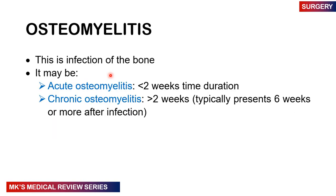So what exactly is osteomyelitis? It's infection of the bone — remember, anything that ends in 'itis' means inflammation — so there is inflammation and infection of the bone. It's divided predominantly into two main types: acute osteomyelitis, which is below two weeks, and chronic osteomyelitis, which is above two weeks — but typically greater than six weeks or more of infection.